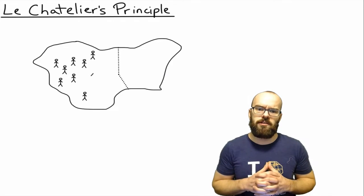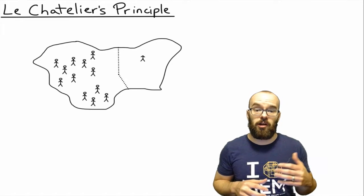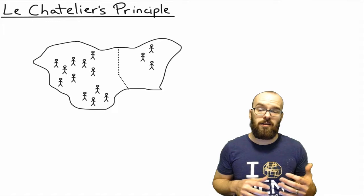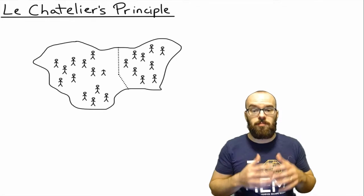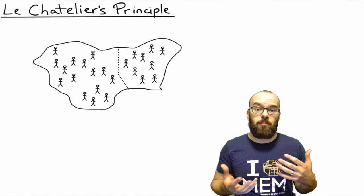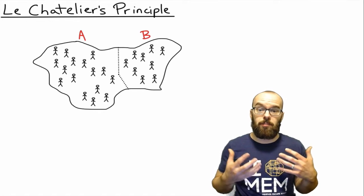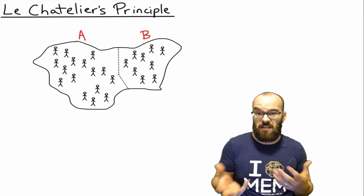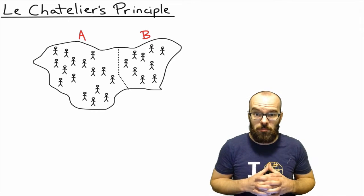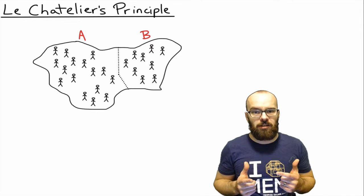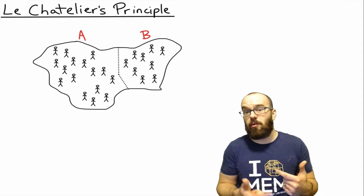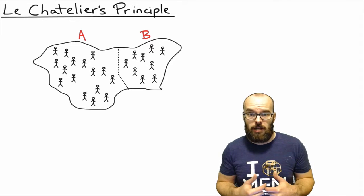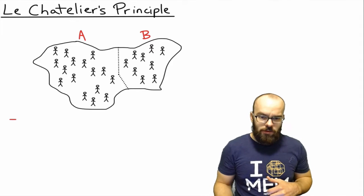The metaphor starts like this: you've got an island with two countries on it — Country A and Country B. Both countries have populations and a population density that are about equal. We're going to look at what happens if we add or remove people from Country A.